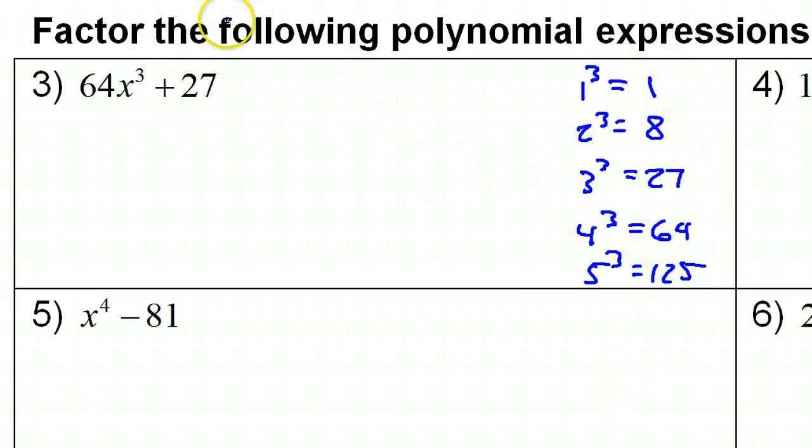Because I'm familiar with these, when I see the 64 and the 27, my brain goes, ah, 64, that's a perfect cube. Ah, 27, that's a perfect cube. So, it pays to be familiar with the first, you know, 10 perfect cubes or so.